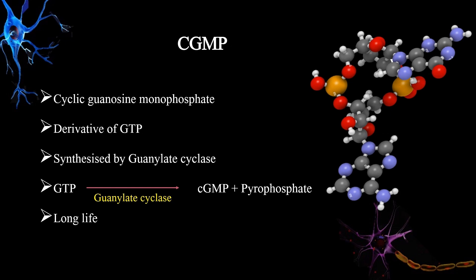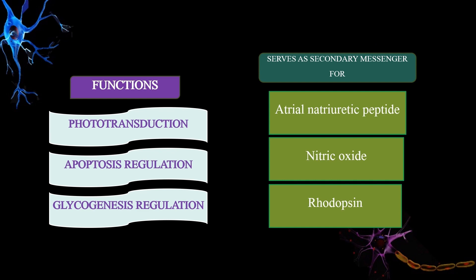The second cyclic nucleotide secondary messenger is cGMP — cyclic guanosine monophosphate. cGMP is a derivative of GTP; the enzyme guanylate cyclase converts GTP to cGMP and pyrophosphate. Compared to cAMP, cGMP has a longer lifespan. The functions of cGMP include phototransduction, apoptosis regulation, and glycogenesis regulation. It serves as a secondary messenger for atrial natriuretic peptide, nitric oxide, rhodopsin, and more.